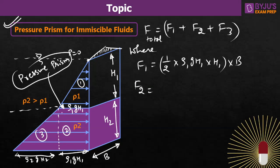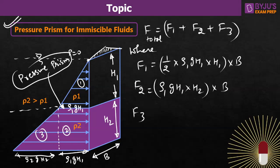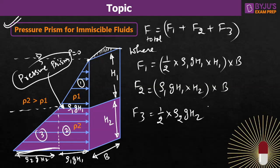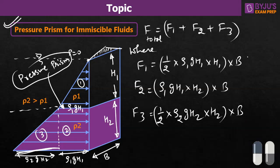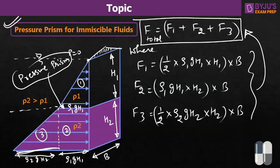F2 is for the rectangle: rho_1·g·H1 (the base) into height H2 into depth B. F3 is again a triangle: half into base rho_2·g·H2 into height H2 multiplied by B. Put these values into the expression F_total = F1 + F2 + F3. We get the total hydrostatic force acting on the surface due to the immiscible fluids rho_1 and rho_2.